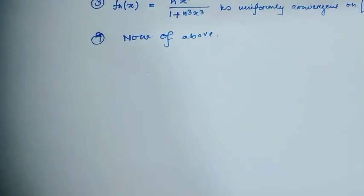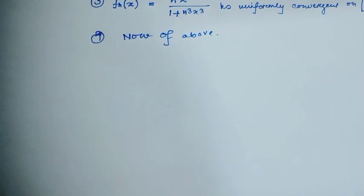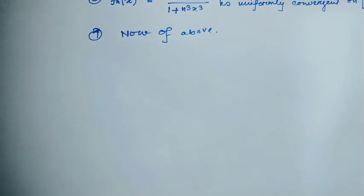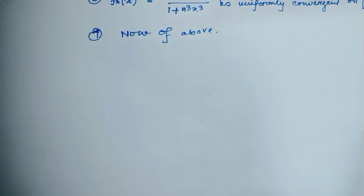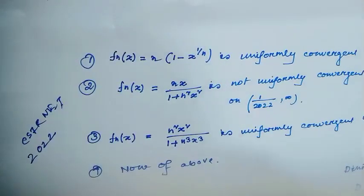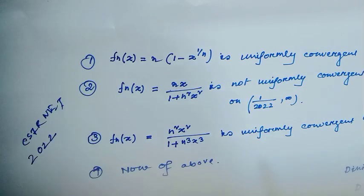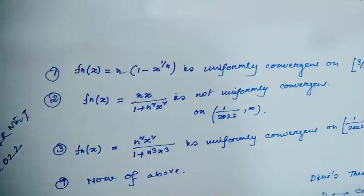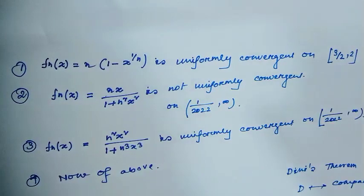Welcome back. Today I will see some questions on sequences of functions which had come in different types of competitive exams. The first example came in the CSRN 2022 exam and uses Dini's theorem and the MN test. The first example: fn(x) = n times (1 minus x) to the power 1/n. Is this sequence of functions uniformly convergent on the closed interval [3/2, 2]?